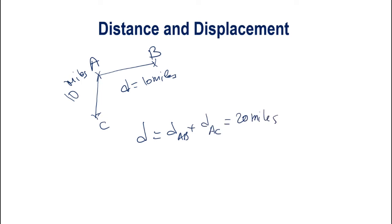Distance is the total length — you just measure it and that's it. It doesn't matter if you go from C to A, or A to C, or from B to A to C. Distance is the length, it is the magnitude, and it doesn't have any direction.